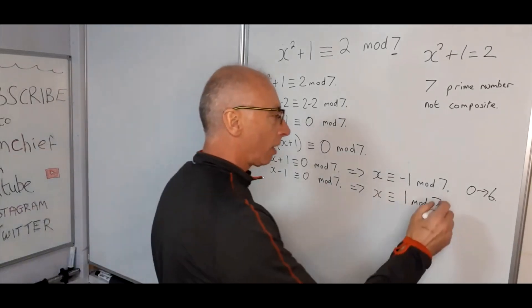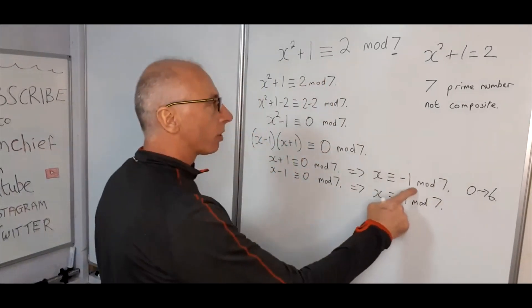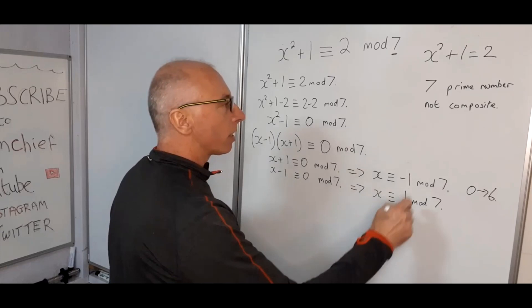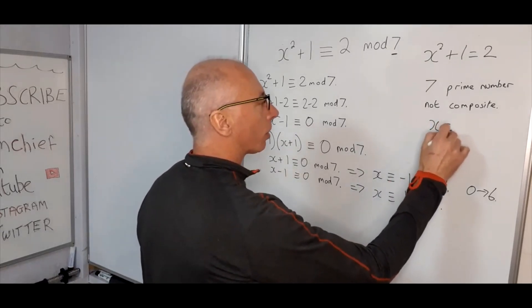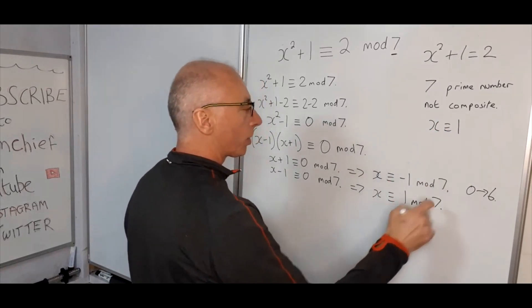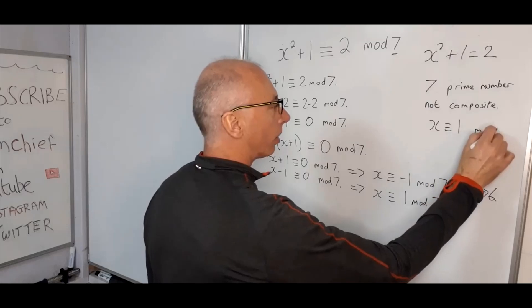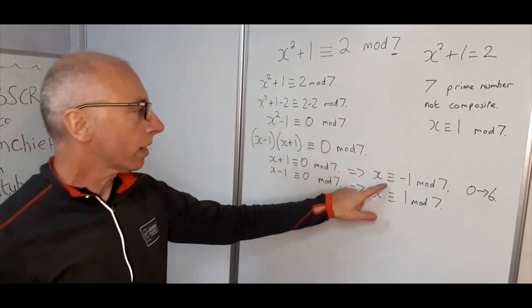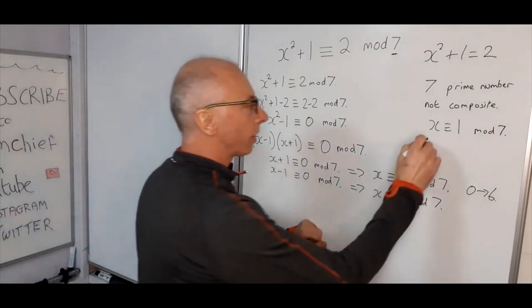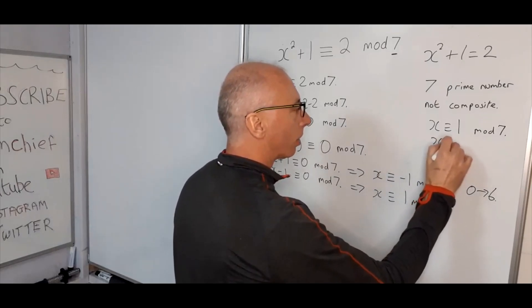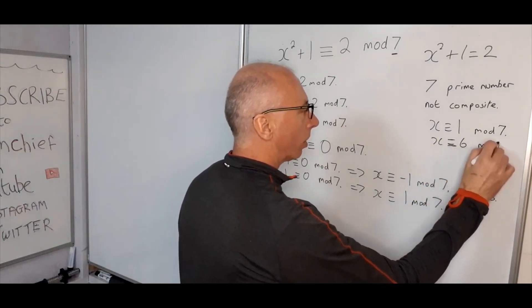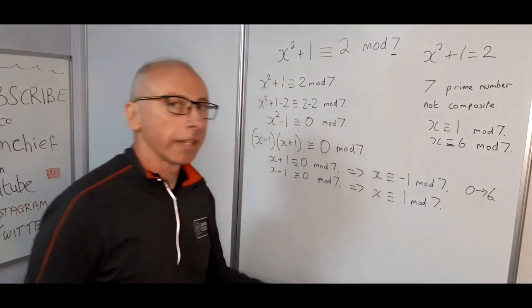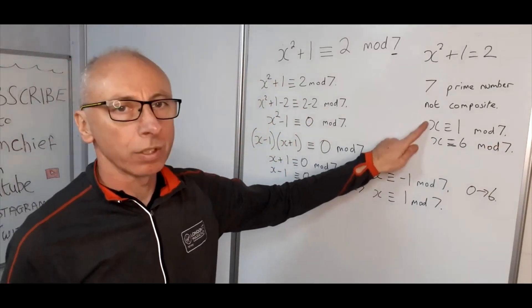So here we've got two solutions: x is congruent with 1 mod 7, or x is congruent with 6 mod 7. Okay, now there's two solutions.